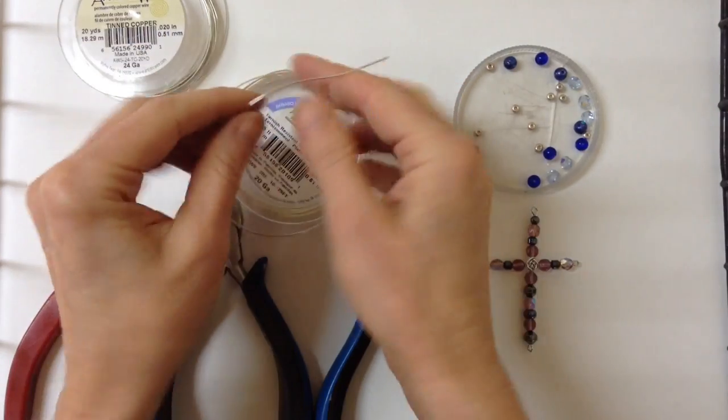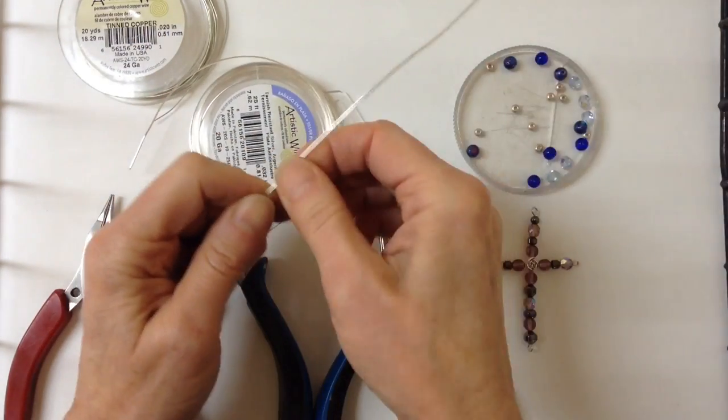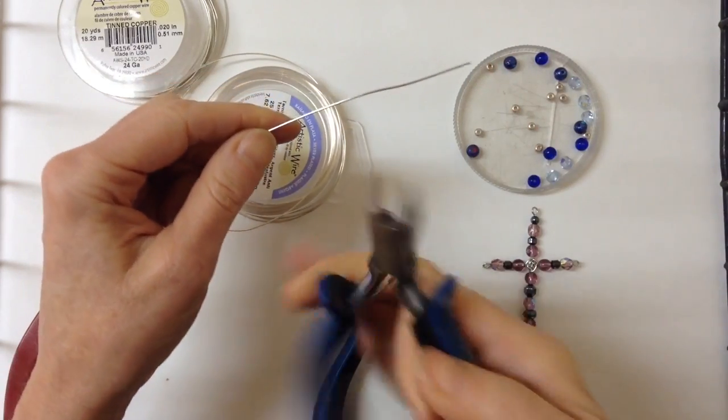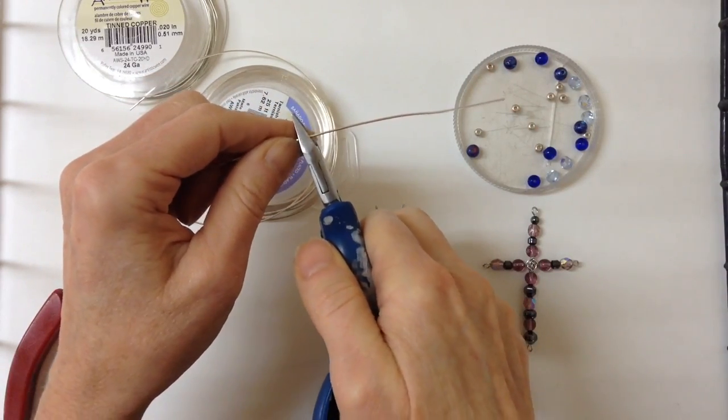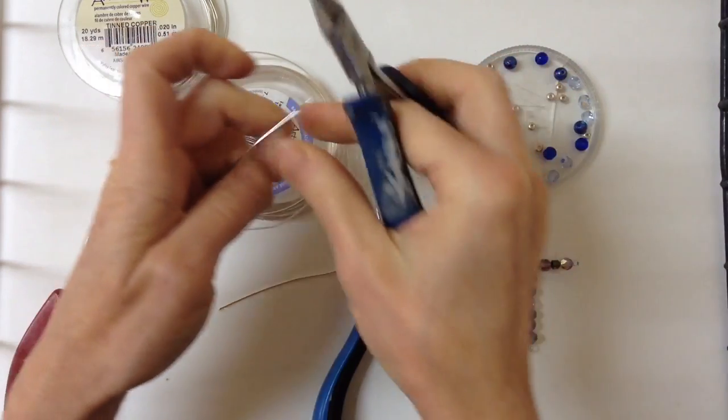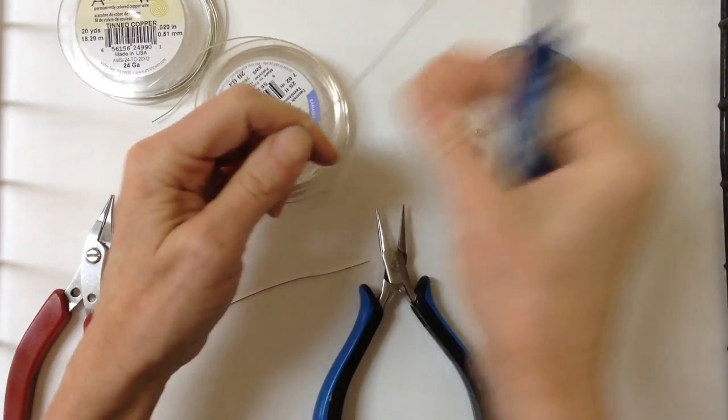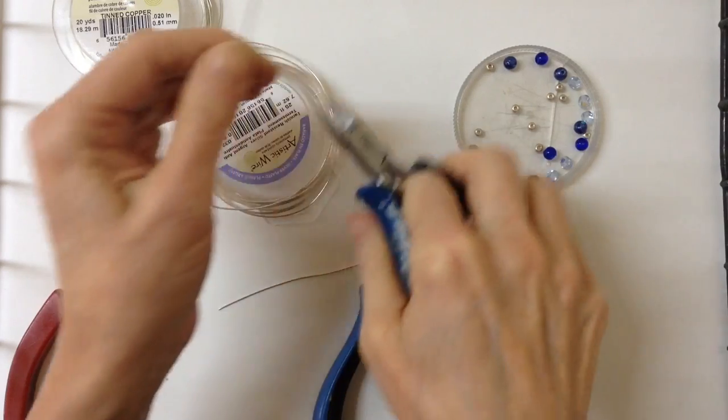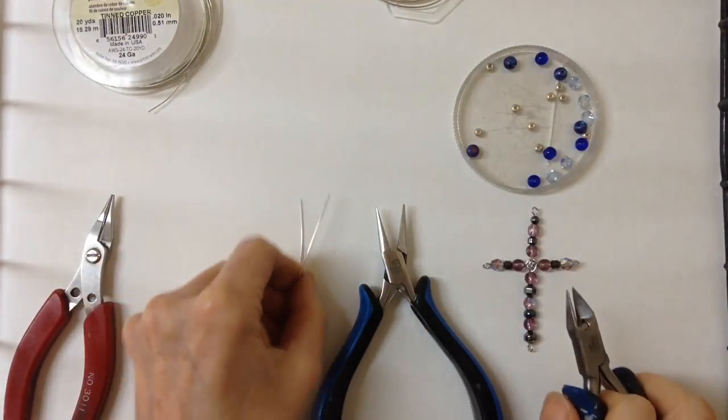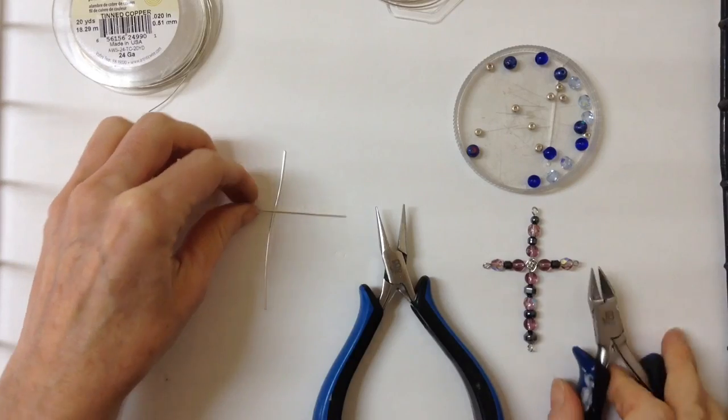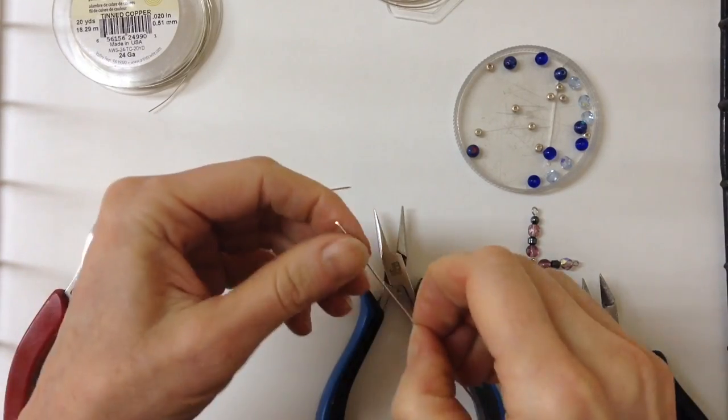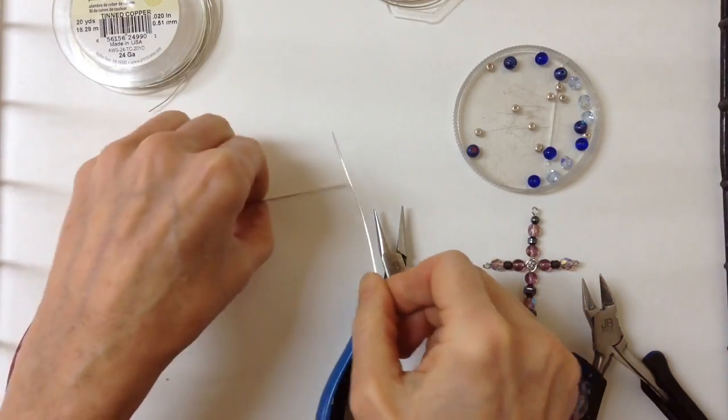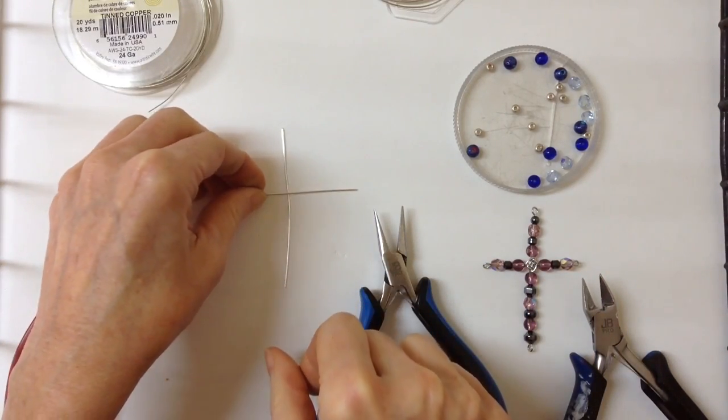We'll cut our pieces of big wire first. With the 20 gauge wire, cut a piece that's about 3 inches, and then another piece for the cross bar that's a little shorter, about 2 inches or so. You can flatten them out with your fingers if you like.